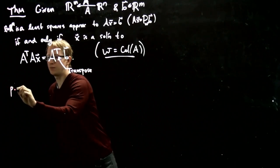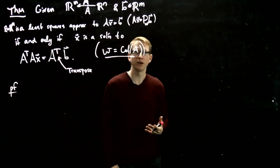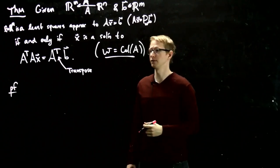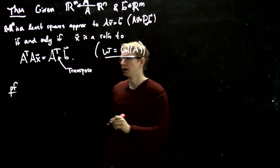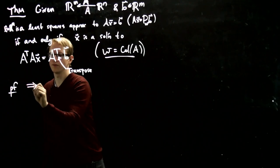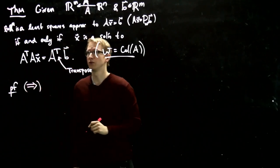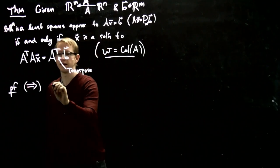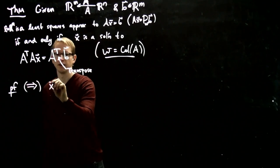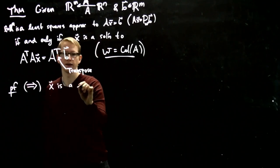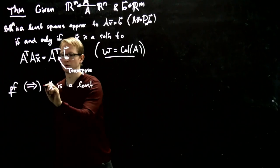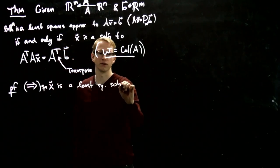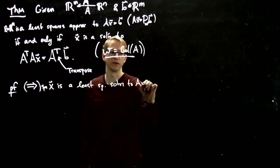Before we give some examples of how to apply this theorem, we'll give the proof. If you want to skip the proof, you can go to the next video. This is an if-and-only-if proof, so we'll prove it in two directions.